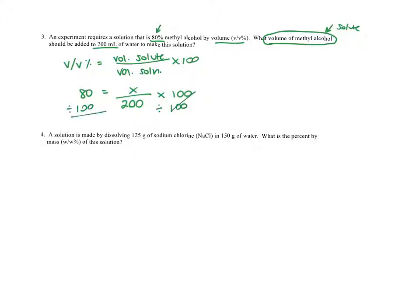Dividing both sides by 100 turns 80% into 0.80, giving me 0.80 equals x over 200. You can think of it as over one and then cross multiply. That gives you an answer of 160 milliliters that need to be added.